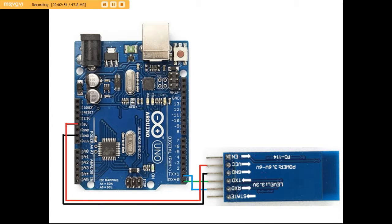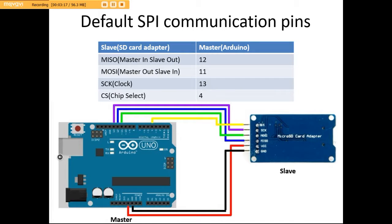Here we are seeing the Bluetooth connection of the Arduino. As stated earlier, we have used the serial pins. That means the Arduino serial TX pin 1 has been connected to the receiver of the Bluetooth module, and Arduino's receiver pin 0 has been connected to the transmitter pin of the Bluetooth module. The SD card has been connected using default SPI communication pins: MISO to pin 12, MOSI to pin 11, clock pin to pin 13, and CS pin to pin 4.